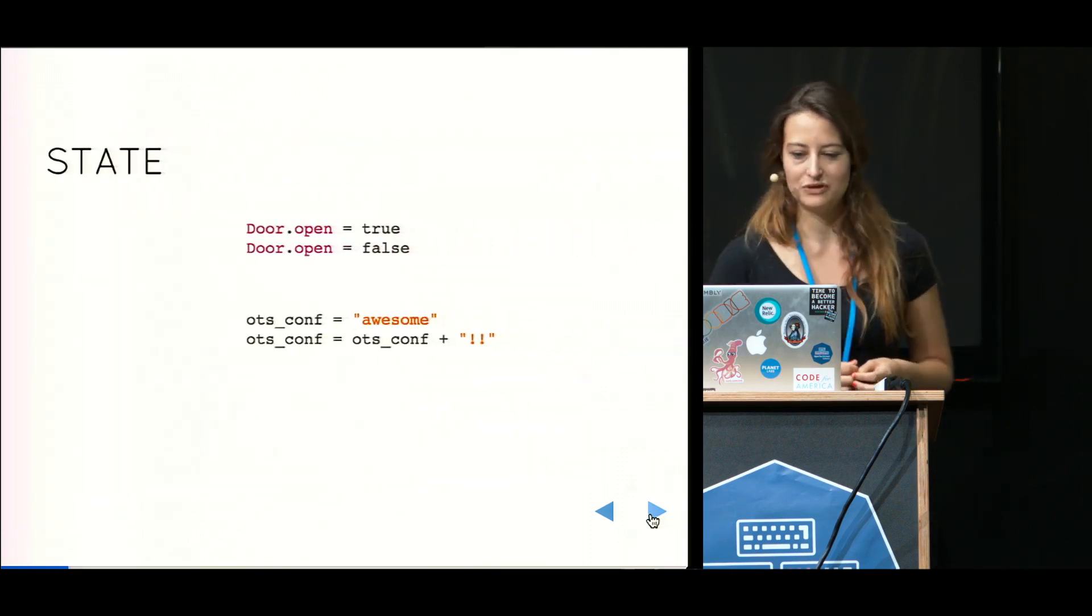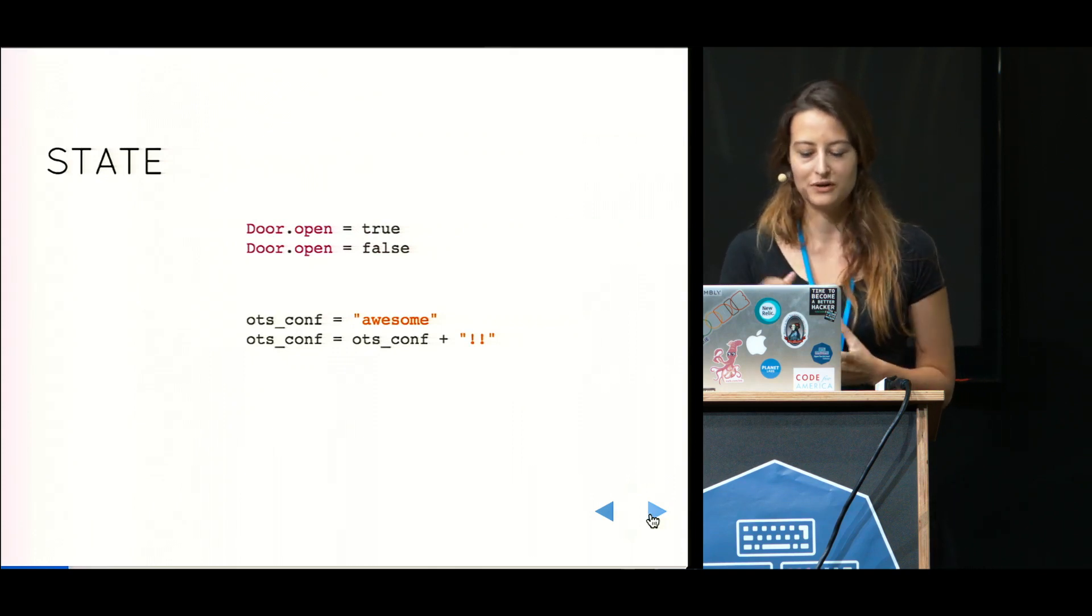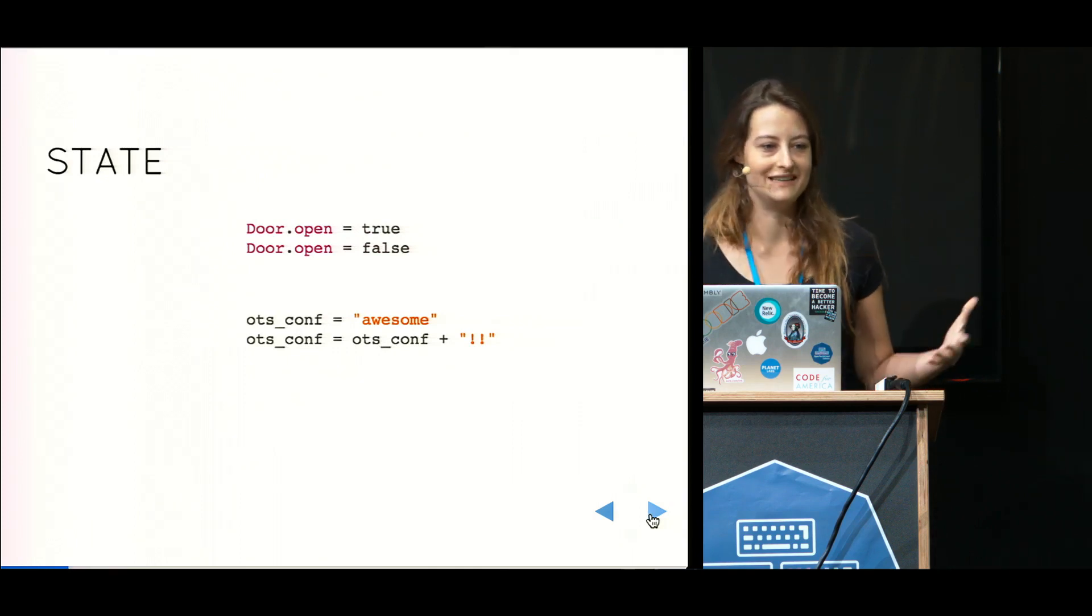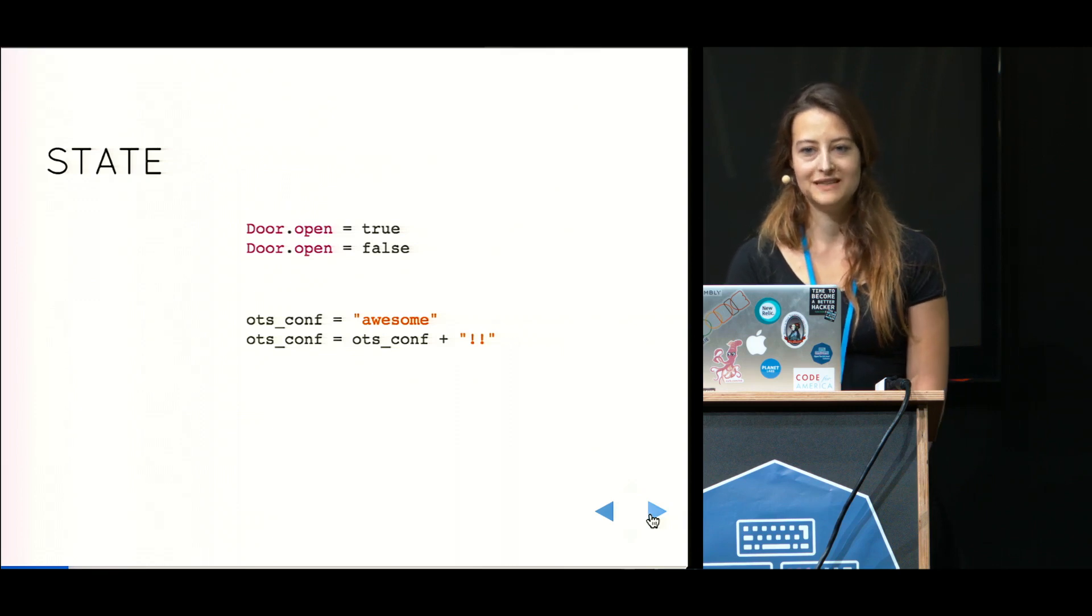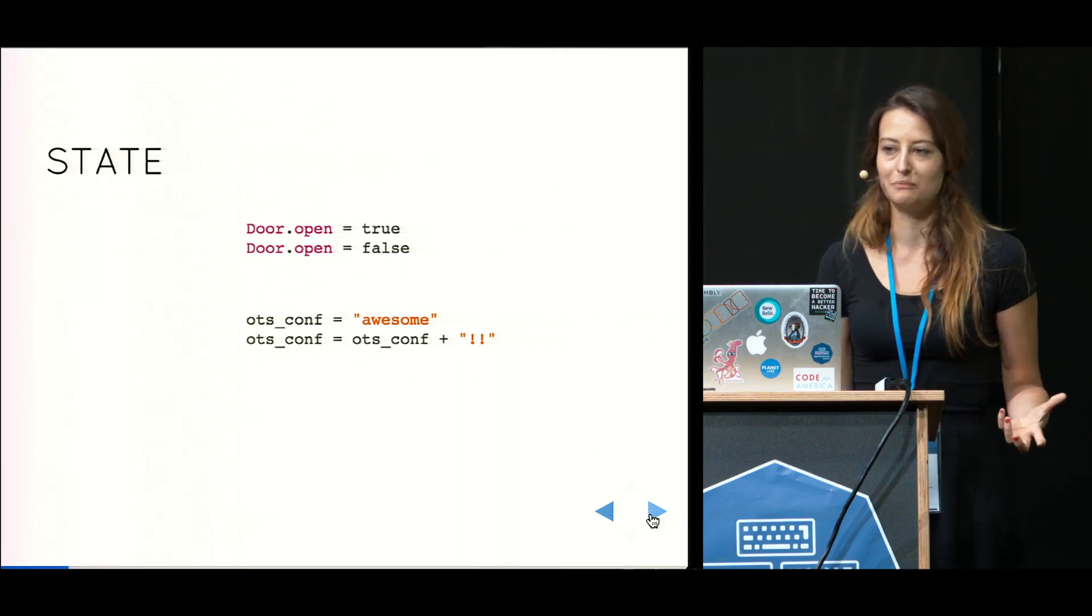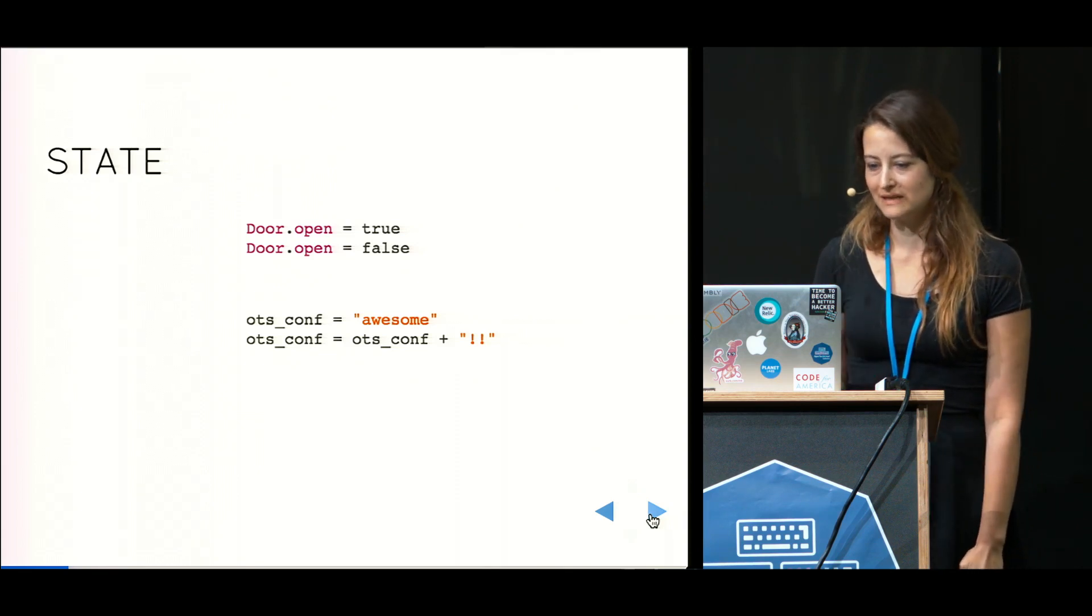Let's look at that in code. We have an object, door. The door has a property, which is true. The property is open, and open is true, the door is open. Now what if we want to close the door? We simply change the value of the property to false. In doing so, we change the state of that property.